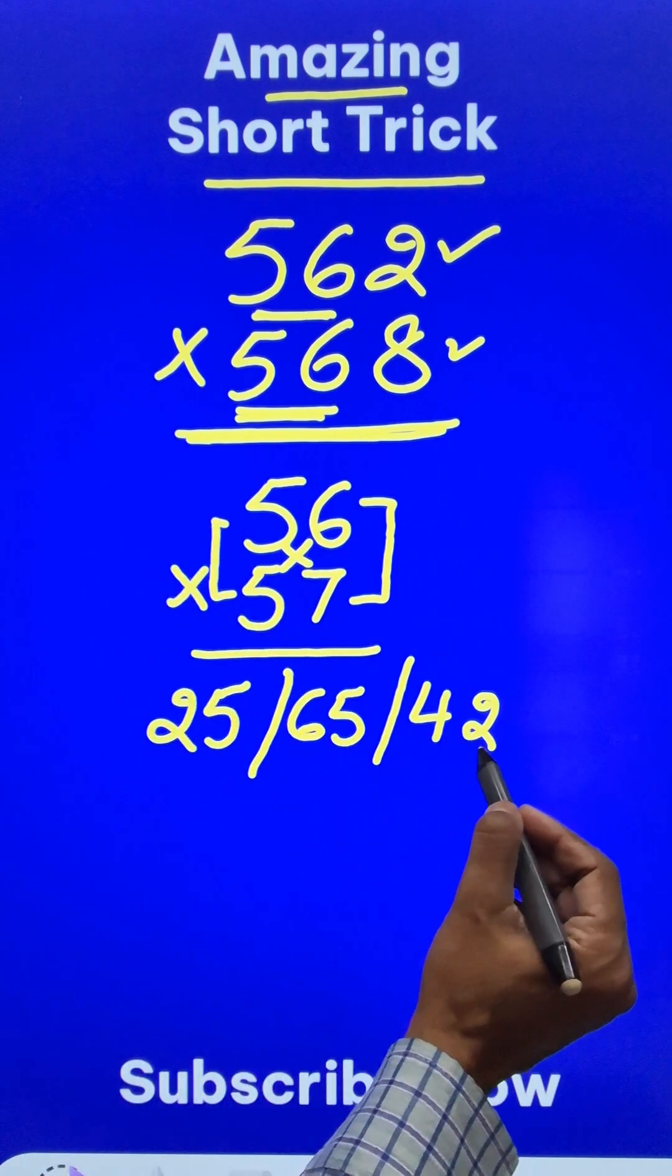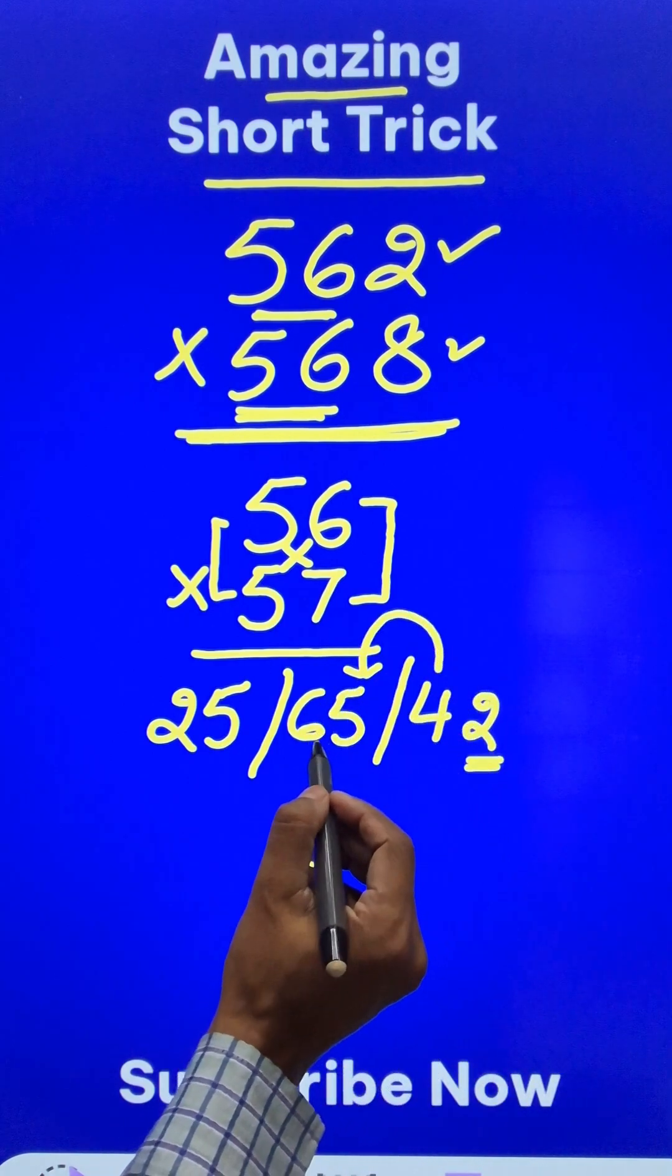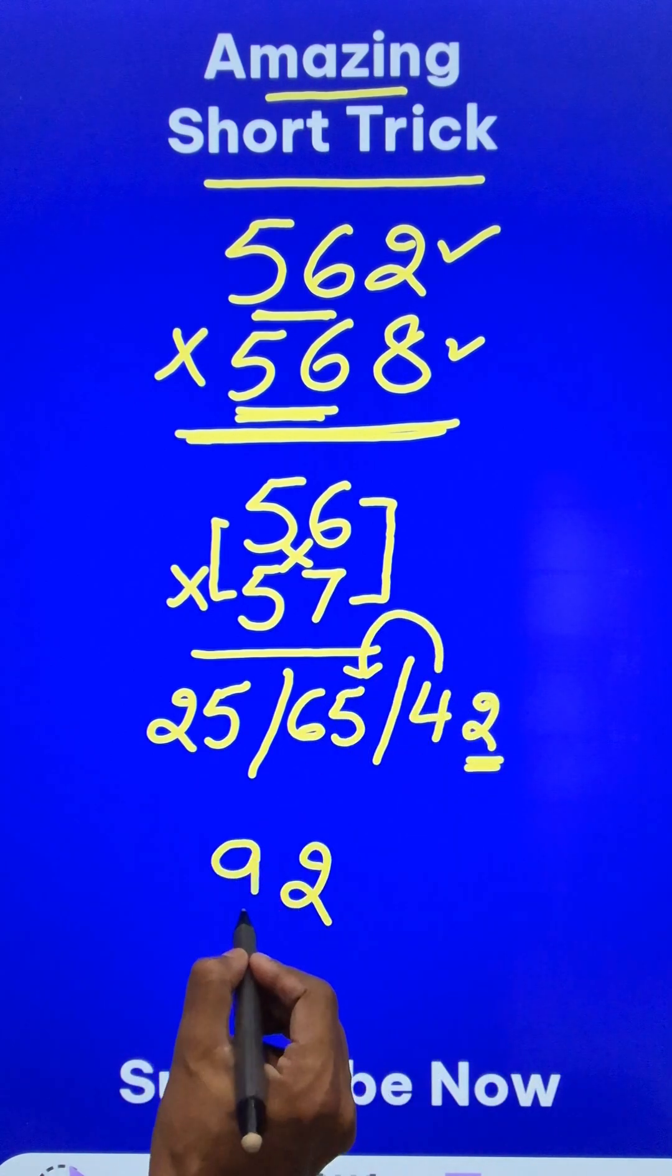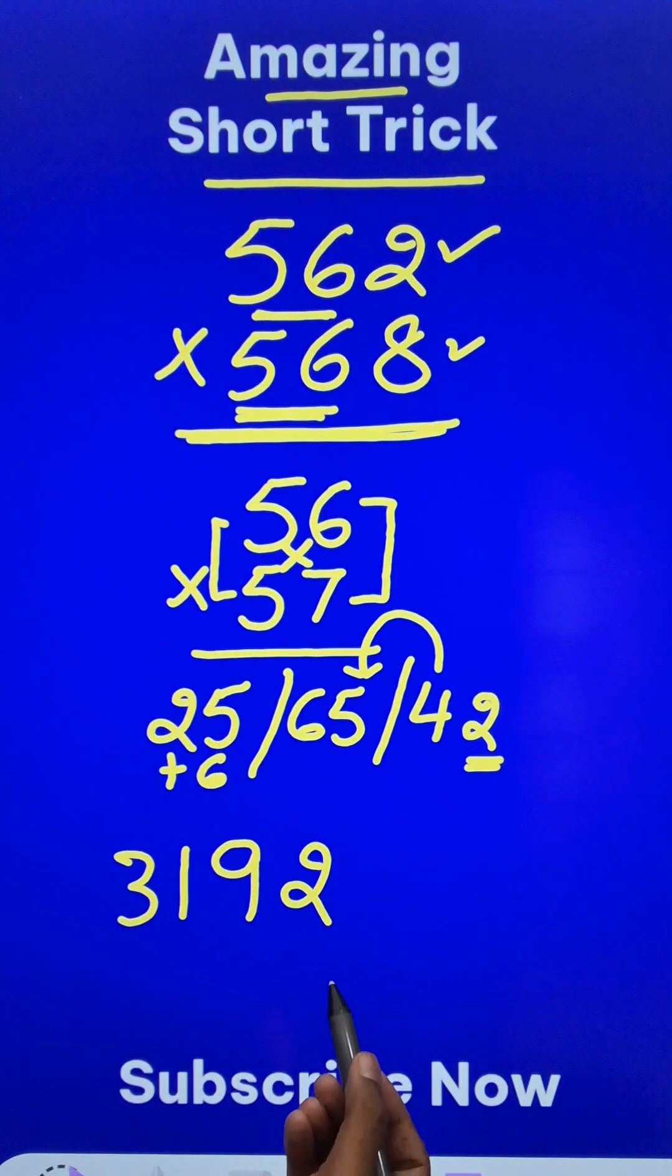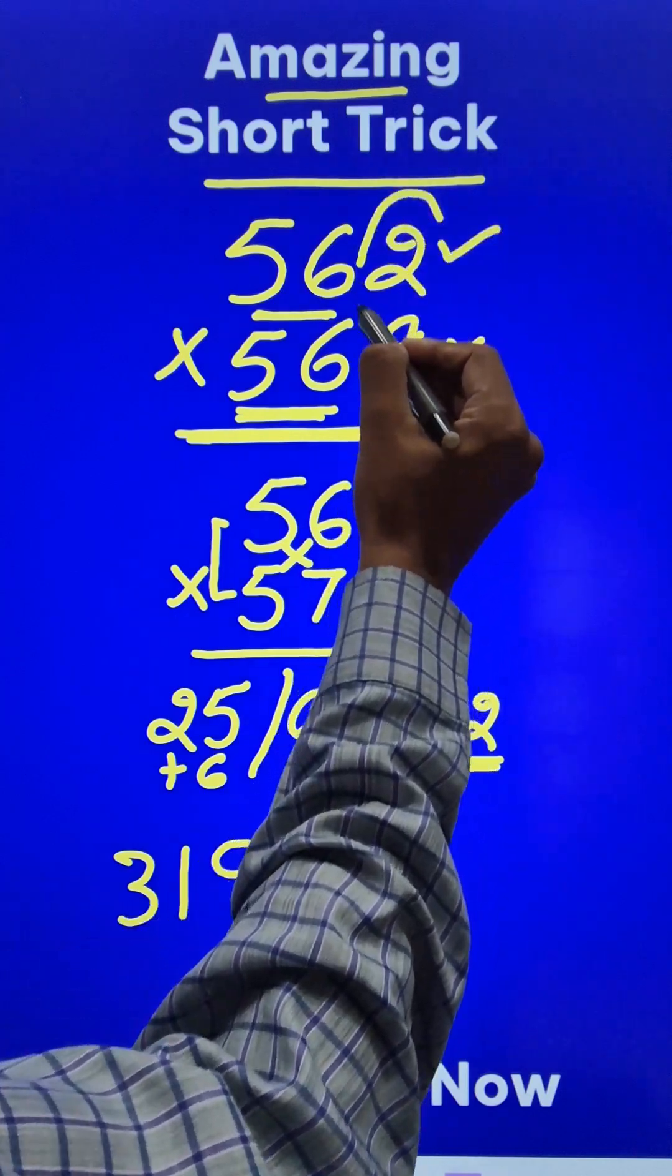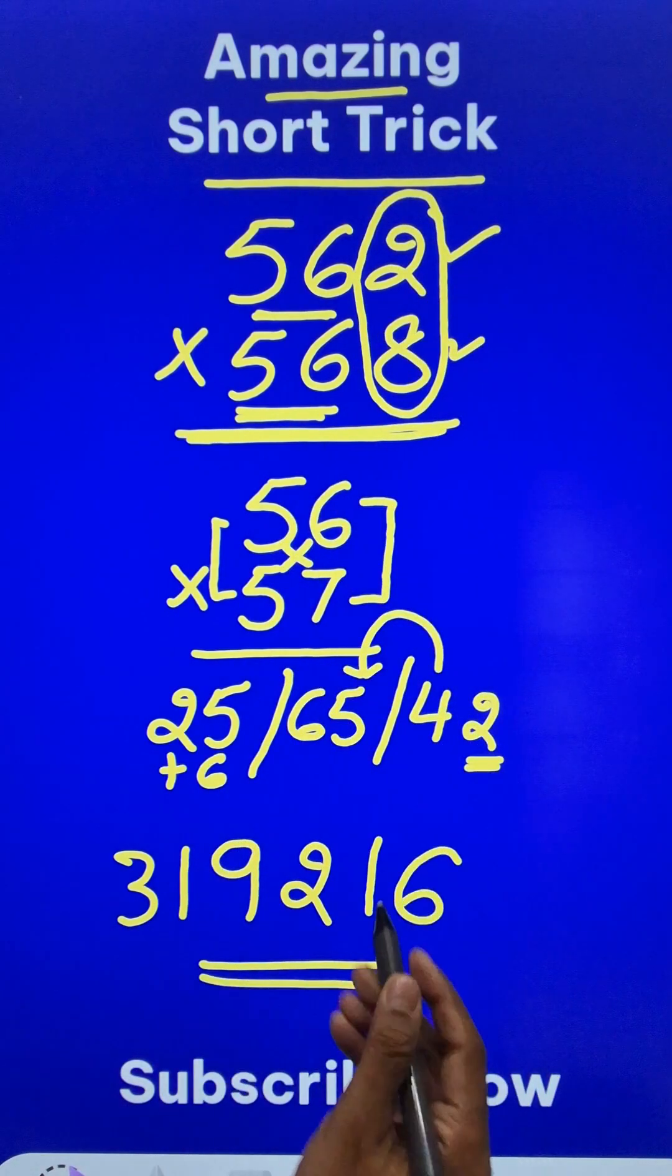Now having got 3 numbers, start writing from the unit digit 2. 4 gets carried forward here, so 65 plus 4 is 69. So 9, 6 gets carried forward, so this becomes 31. So 3192, and rest of it is very easy. Just multiply the unit digits: 2 times 8 is 16. Suffix it here and you have your answer.